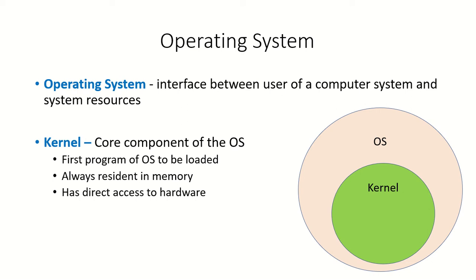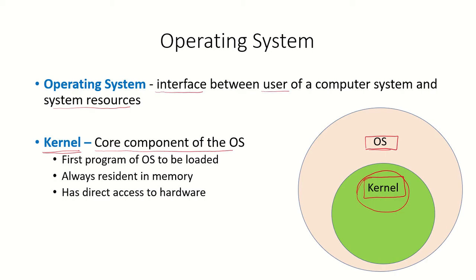As we have seen in our previous lecture, the operating system is an interface between the user of a computer system and the resources of the system. So then what is the kernel? The kernel is the core component of the operating system. The operating system is a software, and that part of this software which takes care of the absolute essential functions the operating system performs is known as the kernel.